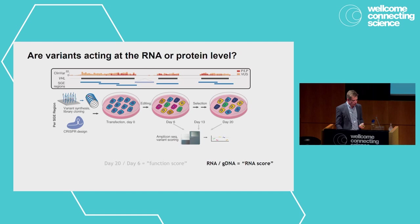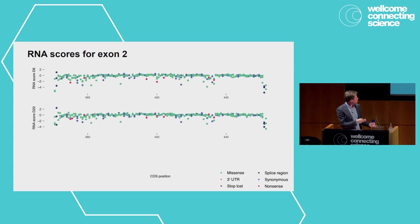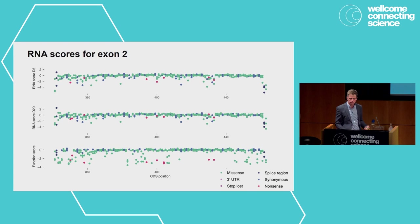Thinking more about mechanism, we also look at the effects of variants on the RNA level — mRNA expression. We calculate what we call an RNA score by quantifying reads for each variant in RNA normalized to genomic DNA. Here are our RNA scores for exon 2 at the day 6 time point of the assay, and what they look like on day 20. The maps are quite similar across both time points.